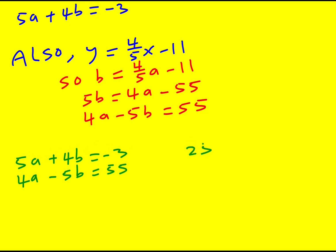5a plus 20b equals minus 15. Times this one through by 4: 16a minus 20b is equal to 220. Because now I can add them together, which gives 41a equals 205. And a is equal to 5.